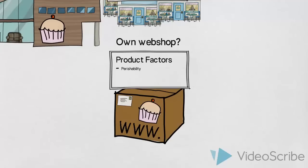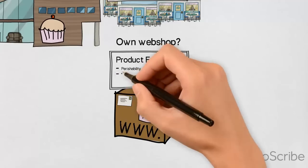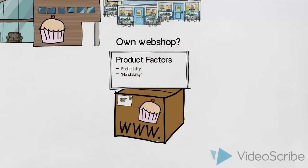Firstly, does the perishability, the fairly short shelf life of a cake or dessert, suit this type of distribution? Would they be able to deliver the product while it is still edible? Would there be ways of overcoming this obstacle? Secondly, are cakes and desserts suitable for handling in this way?